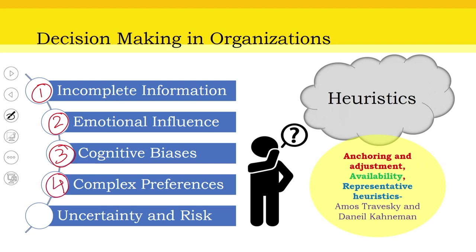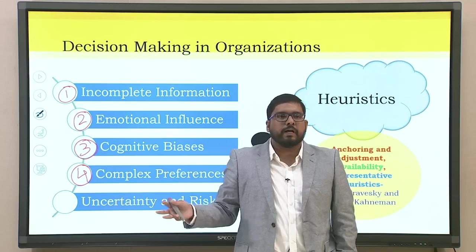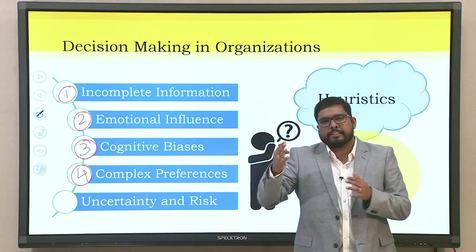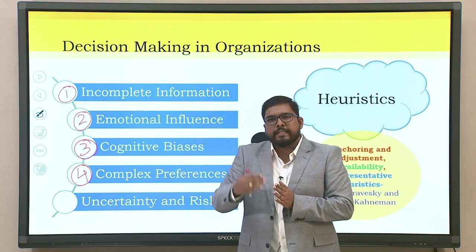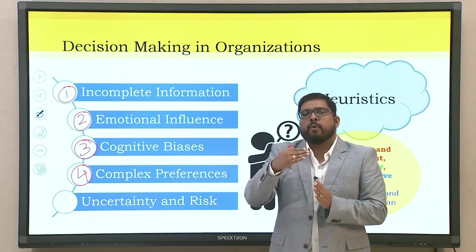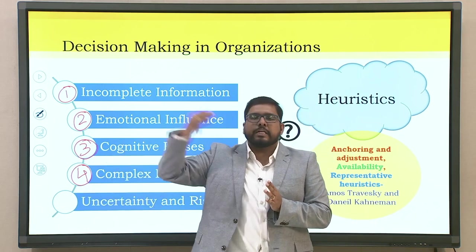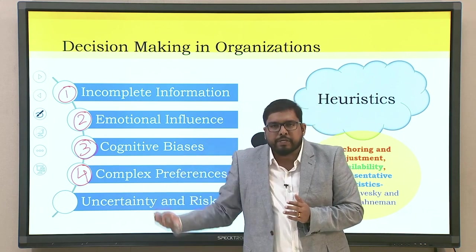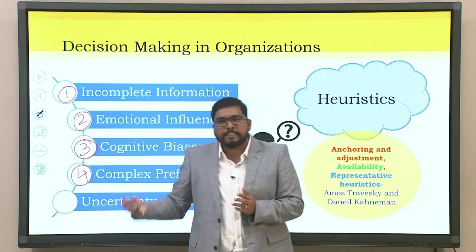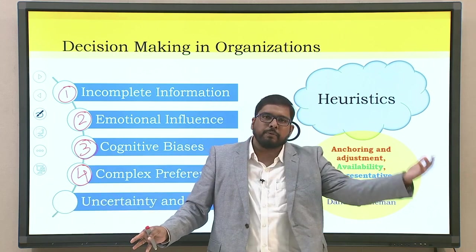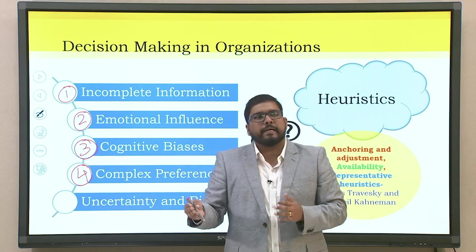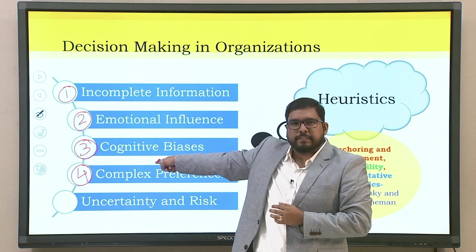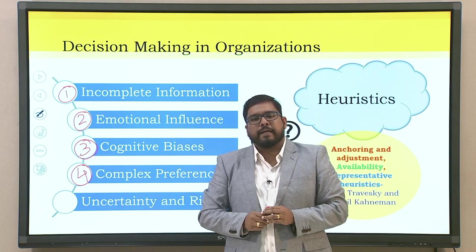The fourth aspect is complex preferences. You have to look into different available options — let's say options A, B, C, D — and match them with available resources or individuals and tasks to be allotted. There could be a mismatch between available talent or resources and the expected outcome or process. Complex preferences may tend to solve one issue but raise another — similar to the workload parity example, where solving at one end creates a problem at the other.